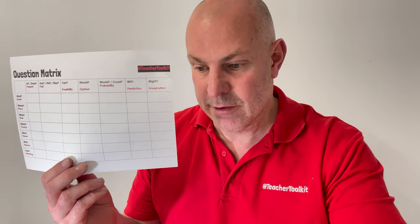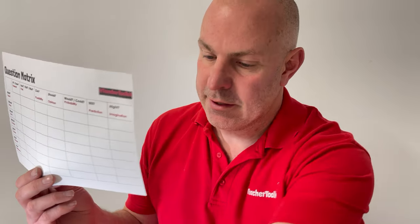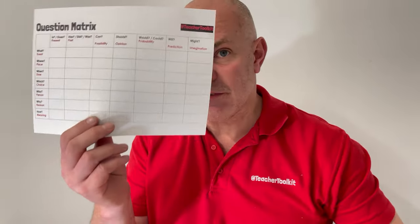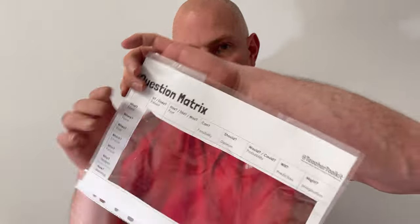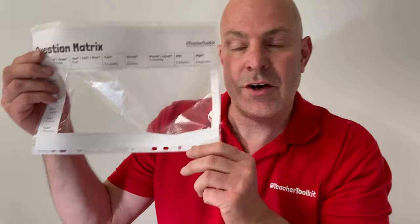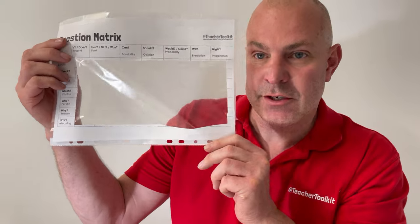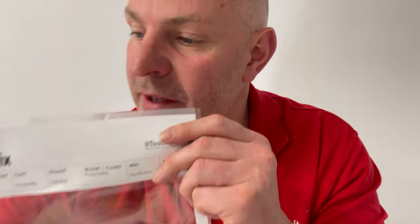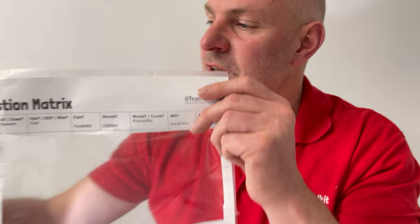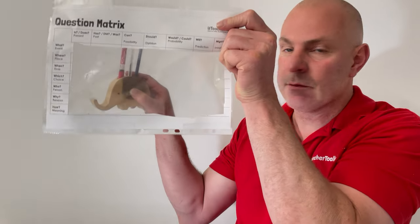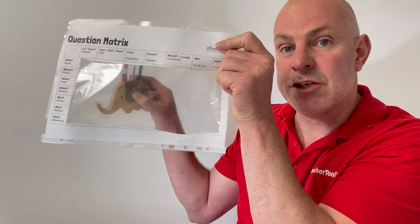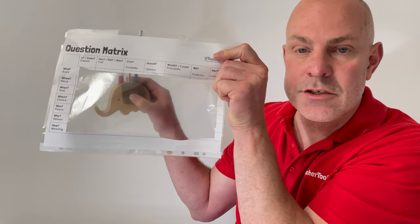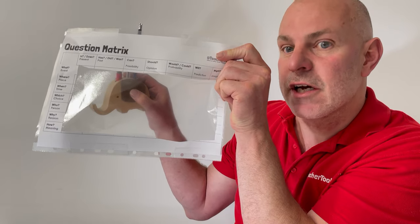I'm going to move the camera shortly. What I've done is I've cut the middle out and stuck a little plastic wallet over the matrix. So if I'm in an art lesson, for example — I've just got an object here of an elephant with a pencil holder — I can put this in as a periscope and then use the question matrix as a prompt for discussion. That's one way.